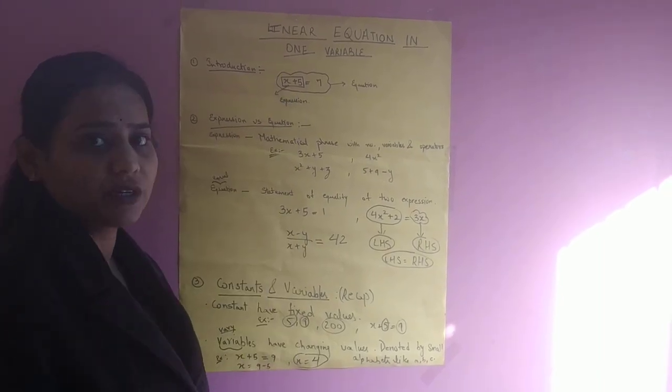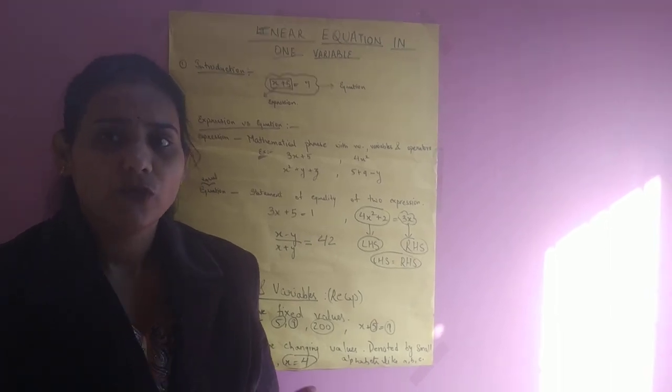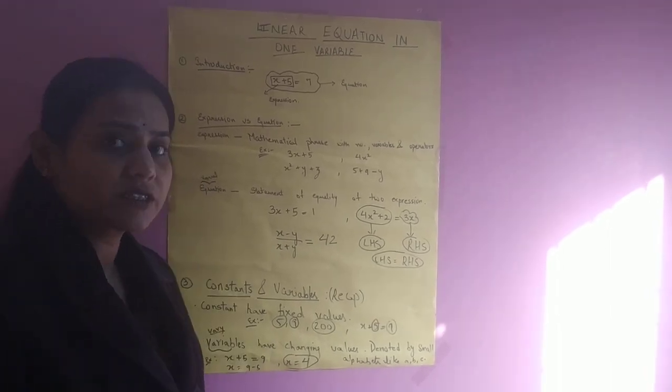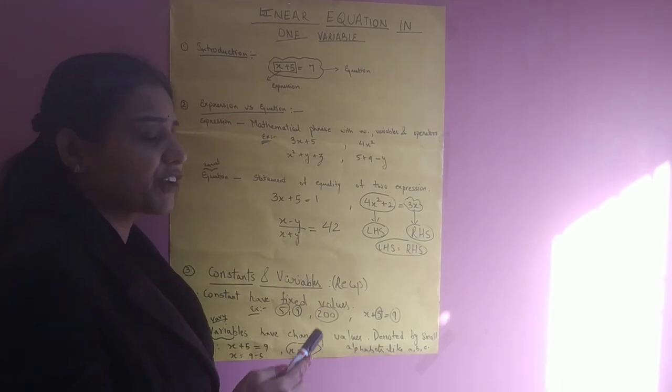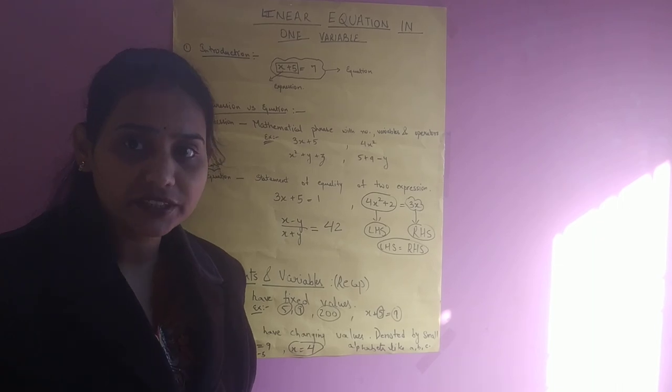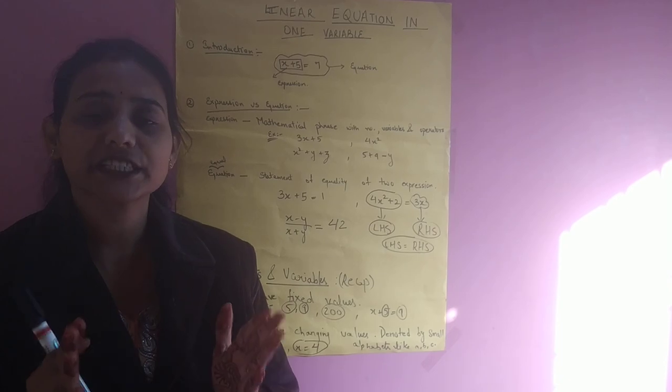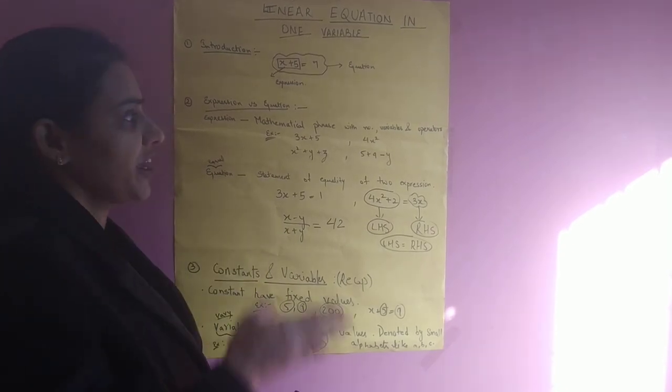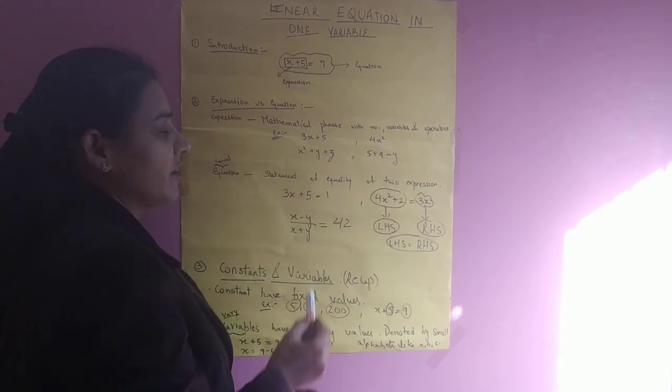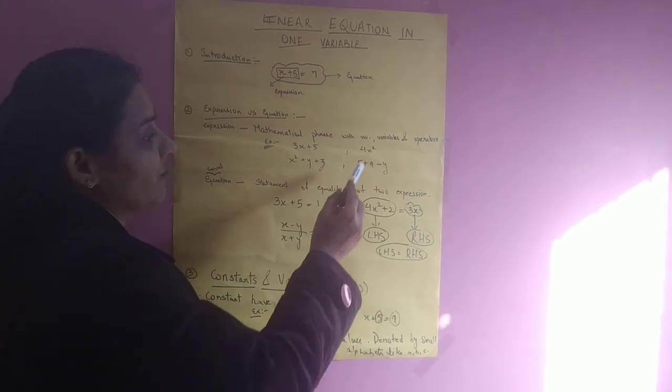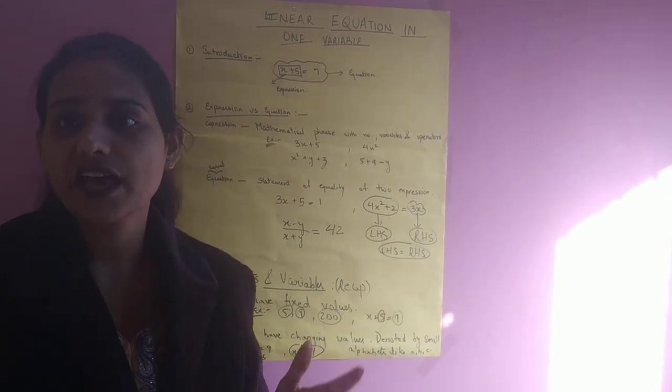What is the difference between an expression and an equation? First of all, we will discuss what is an expression. Expression: mathematical phrase with numbers, variables and operators are known as expressions. So take an example: 3x plus 5, 4x square, x square plus y plus z, 5 plus 9 minus y.